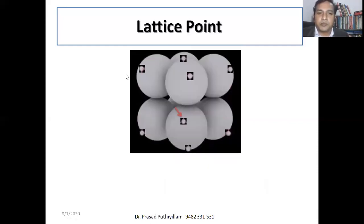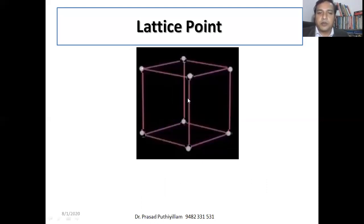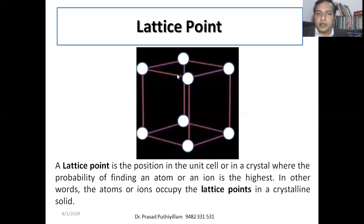Looking at the same picture to explain lattice points: each atom's presence is highest in a specific region, and these points are connected to make a unit cell. A lattice point is the position in the unit cell or in a crystal where the probability of finding an atom or ion is the highest. In other words, the atom or ion occupies the lattice points in a crystalline solid.